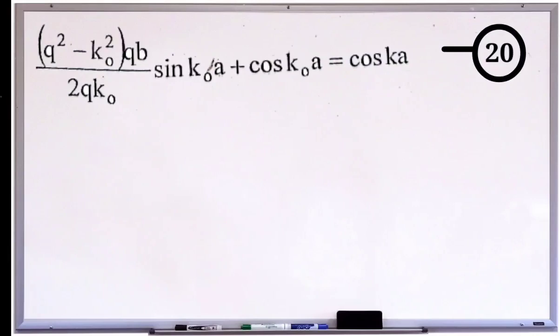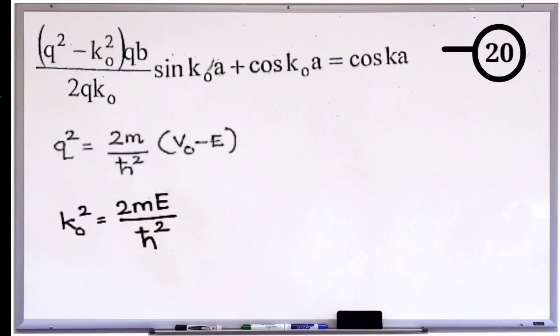Then we know that q² is equal to 2m divided by ℏ² times (V₀ - E) and k₀² is equal to 2mV₀ divided by ℏ². If you have doubt about this, please refer part 1 of the series. We can continue. So q² minus k₀² is approximately equal to 2mV₀ divided by ℏ².